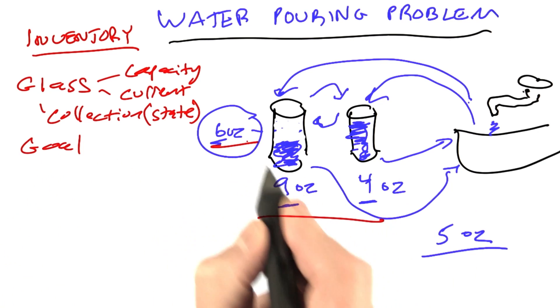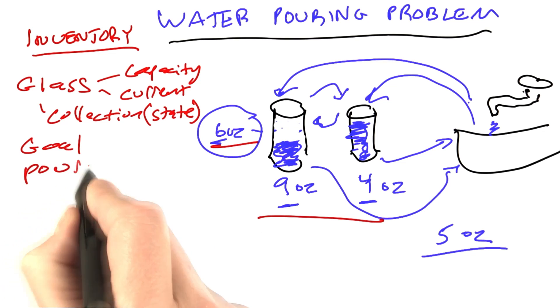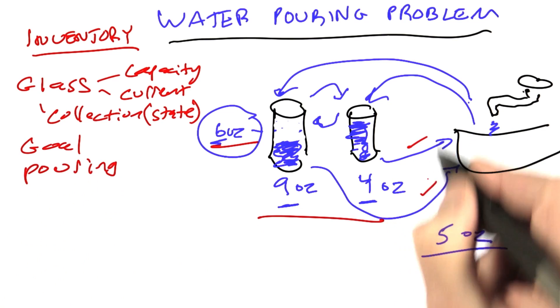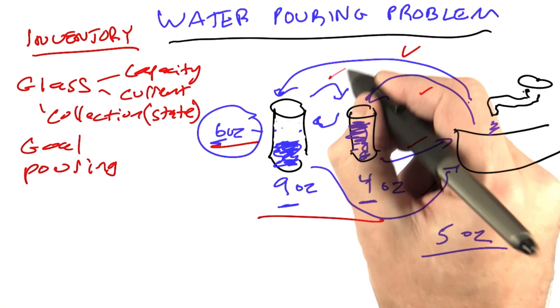Then we have the goal that we're trying to reach. We have the pouring actions: 1, 2, 3, 4, 5, 6.